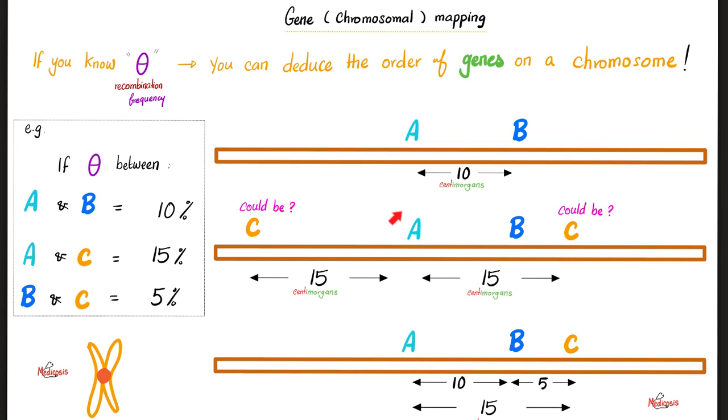Therefore, C could be on the left side or it could be on the right side. How can I tell? Well, wait. Good things happen to those who wait. Read the third part. Between B and C, there is five percent.